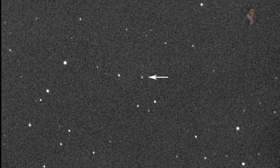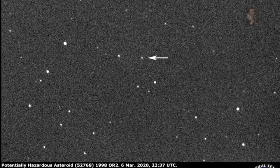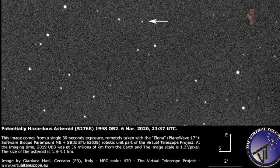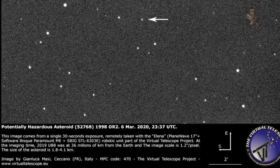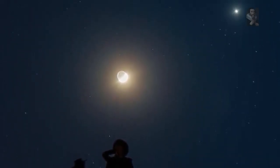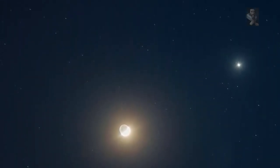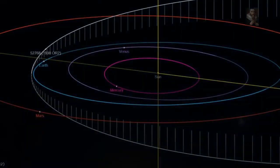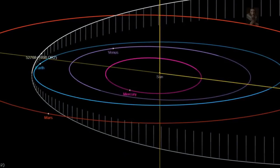the orbit of asteroid 1998 OR2 is known for the next 200 years, and its closest approach to our planet is in this century, and the next will be in 2079, when it will pass within a million miles of us. This asteroid is the largest of all known large near-Earth objects that will pass the planet less than 5 times the Earth-Moon distance.